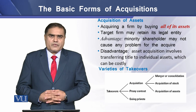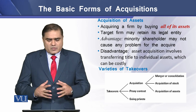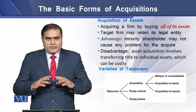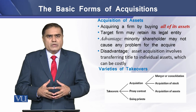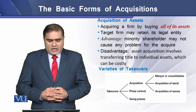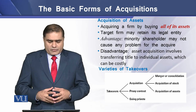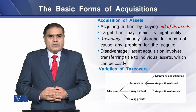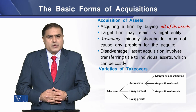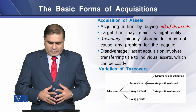The third form of acquisition is the acquisition of assets. In this form, a firm is acquired through the acquisition of all of its assets. The target firm may retain its legal entity. The advantage in this form of acquisition is that the minority shareholders may not cause any problem for the acquirer.